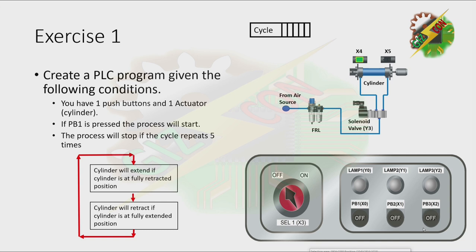Create a PLC program given the following conditions. You have one push button and one actuator. If PB1 is pressed, the process will start. The process will stop if the cycle repeats 5 times. The process: the cylinder will extend if the cylinder is at the fully retracted position. Then, the cylinder will retract if the cylinder is at the fully extended position.